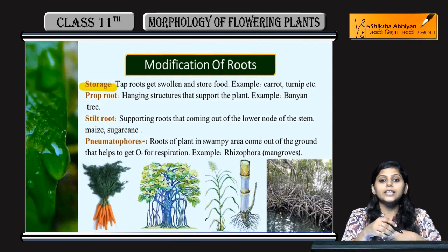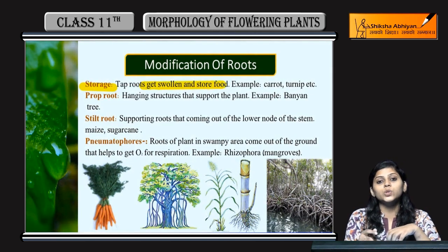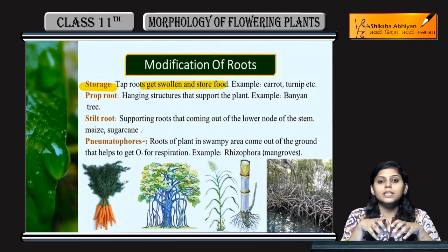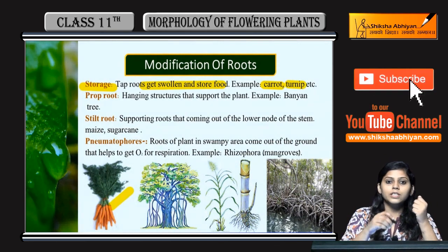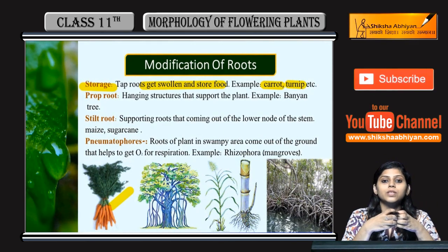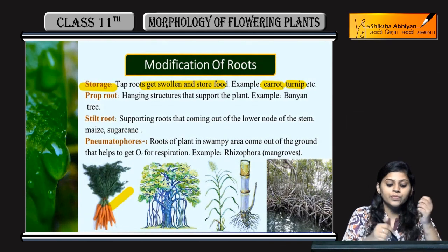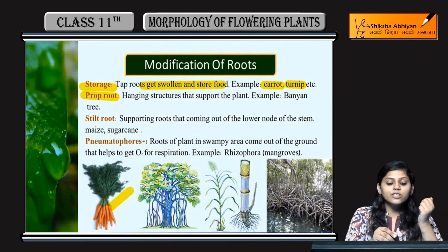Storage ke liye tap roots hoti hai — woh swell kar jati hai aur food store karti hai. It is seen in case of carrots and turnips. Carrots aur turnips ka jo swollen part hota hai, woh ground ke below grow karta hai aur under the ground food store karta hai.